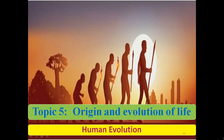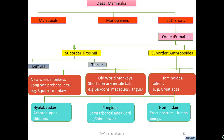First of all, it includes the class Mammalia. Mammalia is categorized into three forms: the first one is Marsupial, known as pouched mammals; the second one is Monotremes, known as egg-laying mammals; and the third one is Uterine, known as placental mammals. This Uterine is classified into the order Primates.